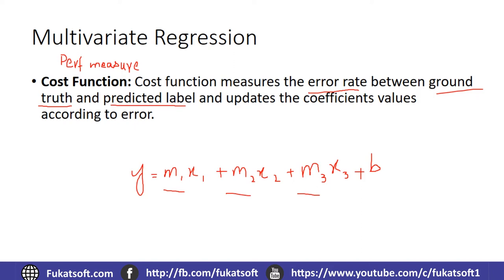In our subsequent lectures, we will see it in detail. Now we have enough idea for you to use the cost function. It measures the error rate between ground truth and predicted label, and updates the coefficient values according to the error. The coefficient values will be updated according to what we have got as an error rate.